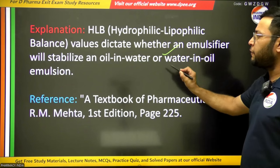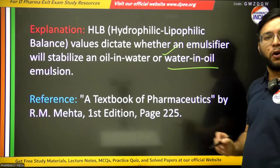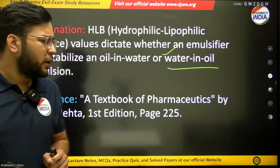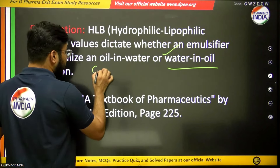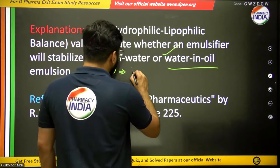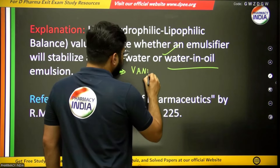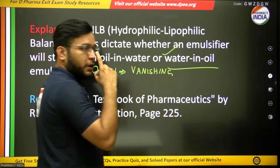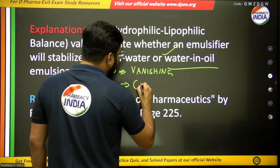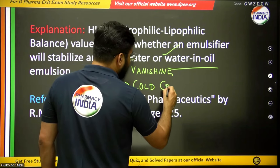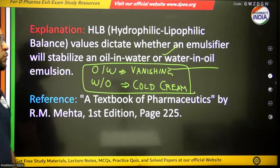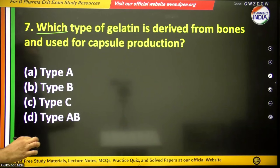The HLB value dictates whether an emulsifier will stabilize an oil-in-water or water-in-oil emulsion. The best example of oil-in-water emulsion is vanishing cream, and the best example of water-in-oil emulsion is cold cream. Please write a short note on this, as questions are asked from these points.